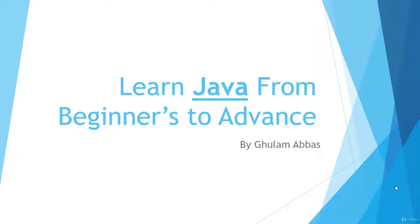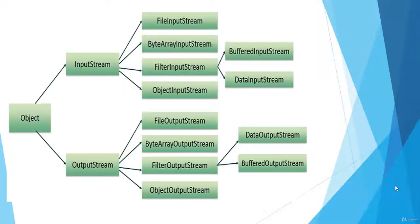Hello and welcome back to this course. In our previous video we discussed about the buffered output stream, and today in this video we will discuss about the buffered input stream. You can see in the hierarchy of the file handling classes that buffered input stream is the child class of the filter input stream. So let's discuss what is a buffered input stream class in the java.io package.